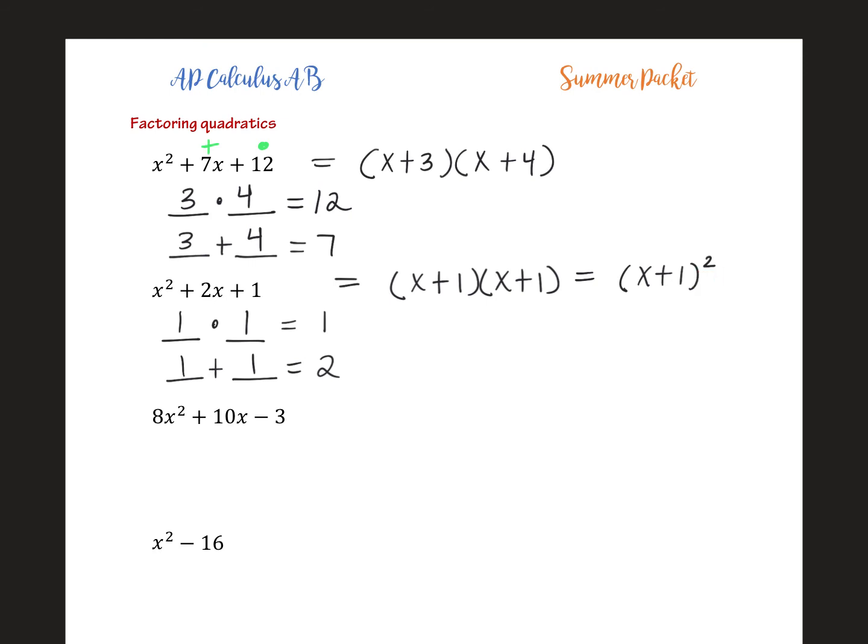So these first two were easy because the leading coefficient, the coefficient with the highest degree, so the coefficient with the x squared is 1. What happens if you don't have that? Well, it just becomes a little bit more algebraic or computation thinking of multiplication and division. So our answer is going to be a product of two factors like so.